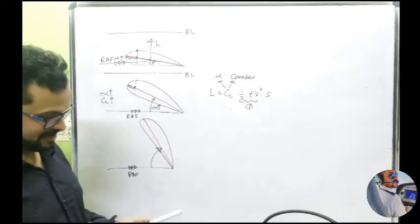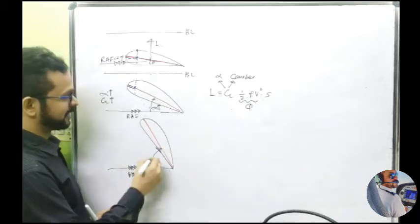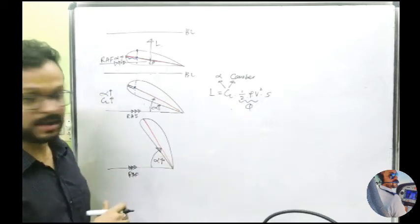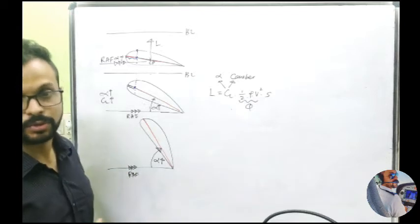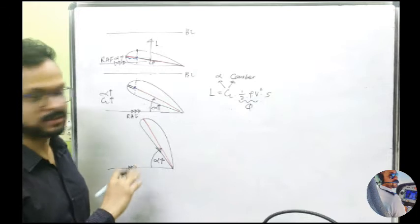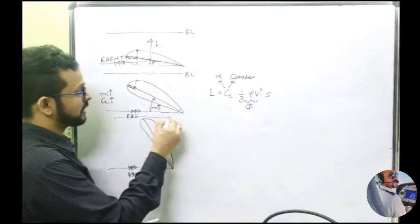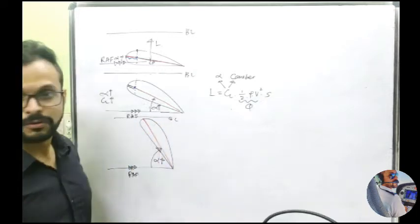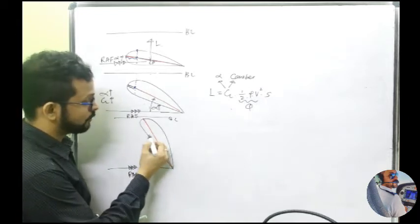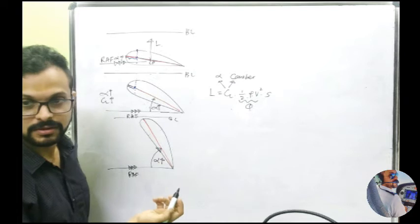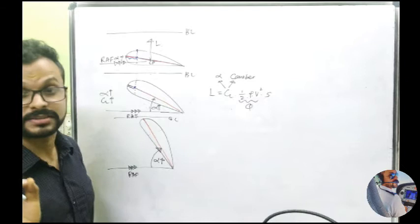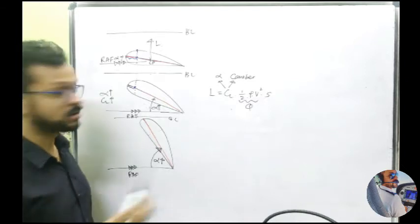Let me increase the angle of attack even further — it is very close to probably the stalling angle in this pictorial representation. If I draw the boundary layer here, where is the point of lowest pressure? The point of maximum thickness of the aerofoil is somewhere here, but the point producing the lowest pressure — the highest amount of lift — is somewhere further forward.